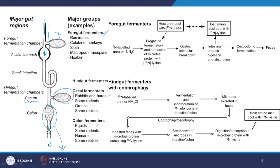If the human body or other hindgut fermenters could capitalize on the biomass in the poop, then we would require much less food. This advantage is only present for foregut fermenters. In a particular study, what they did was add urea or ammonium chloride with a heavier isotope of nitrogen. These were heavier urea or heavier ammonium chloride — this is stable isotope probing, a technique in which a heavier isotope of carbon, nitrogen, or any other element is added.